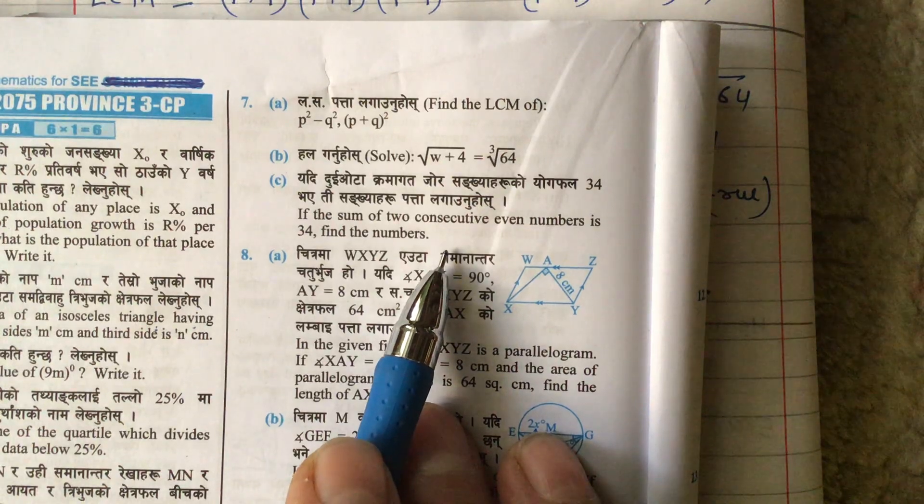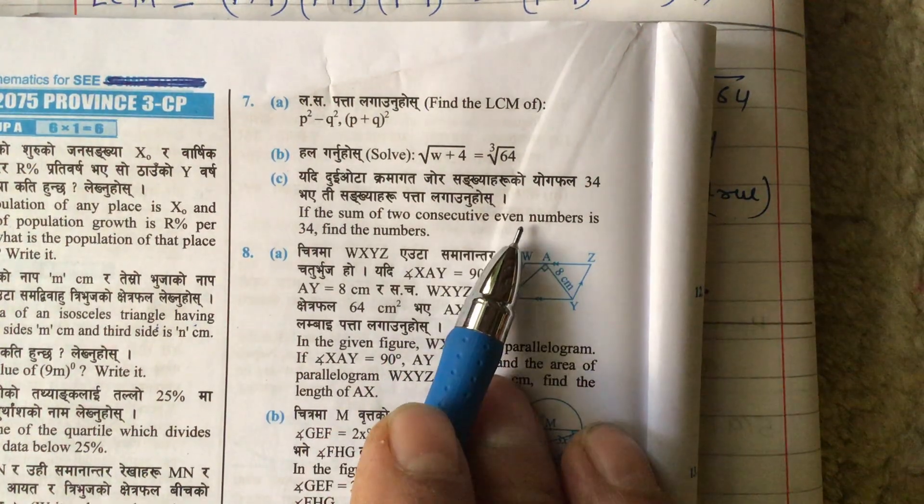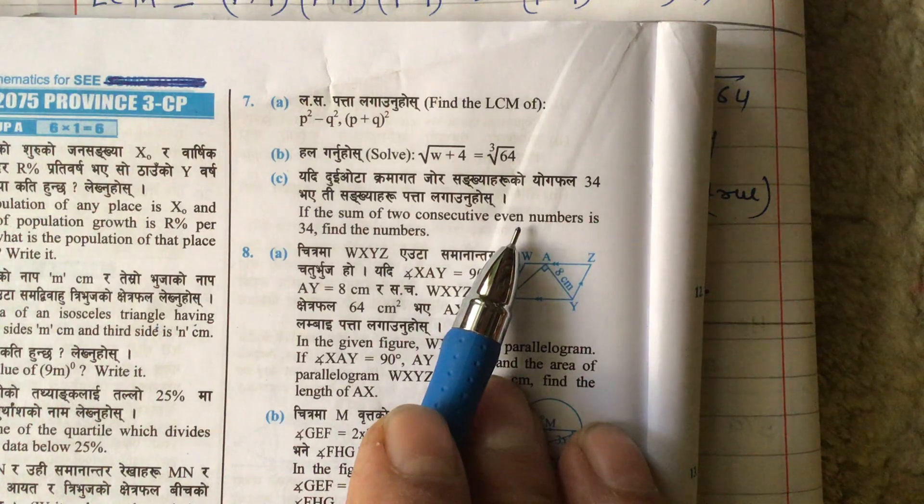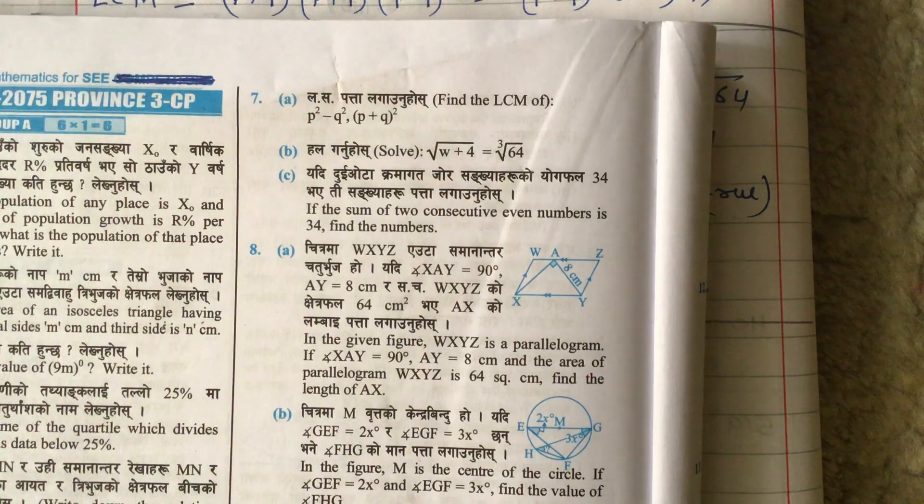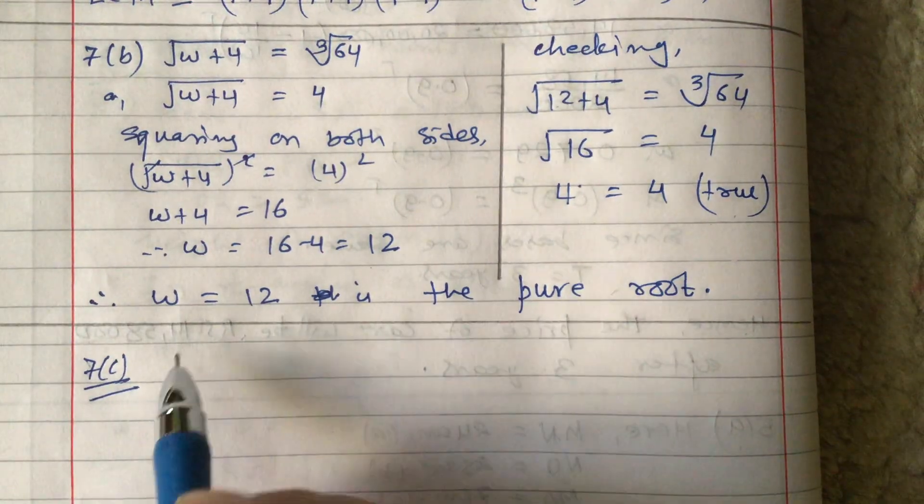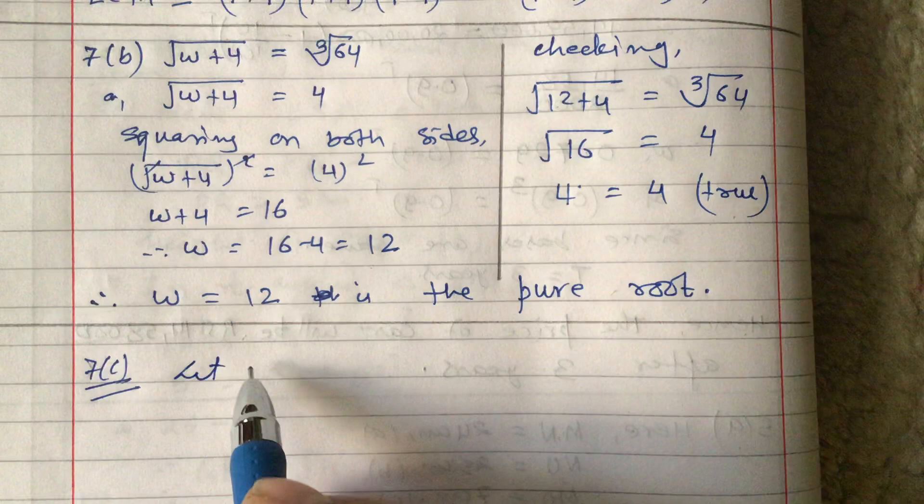We are asked to find two even numbers which are consecutive in nature. Consecutive means coming together. Now let us consider the two consecutive even numbers.